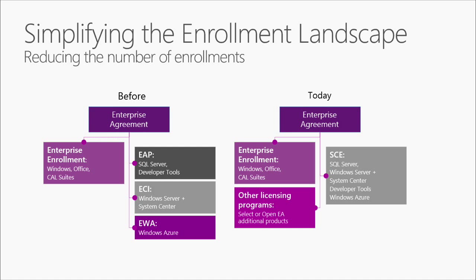In comparison, the new landscape is simplified with the Server and Cloud Enrollment, which replaces the EAP, the ECI, and the EWA, creating a much more streamlined and simplified set of options for customers. Moving to Server and Cloud, Microsoft is offering customers the option to make installed base-wide commitments to core products within the SCE in return for a series of benefits. For customers buying Windows Server and System Center through ECI without installed base-wide commitments, Core Infrastructure Suite SKUs are now available in other programs including SELECT and the Enterprise Enrollment as an additional product — a great SKU for transactional purchases.